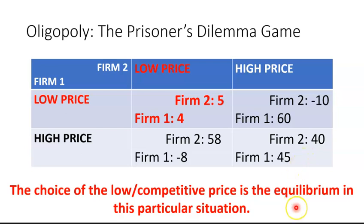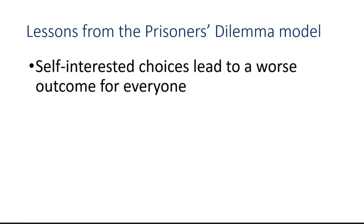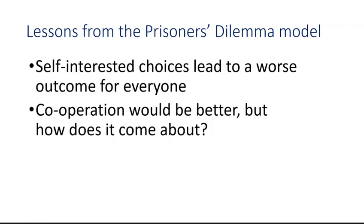We end up with what could be called an equilibrium: given that each firm has chosen the low price, there doesn't seem to be an incentive to move away and choose a high price. What do we learn from this simple story? If people only think about themselves and make short-term, greedy, self-interested choices, then everybody ends up with a worse outcome. Everybody understands that cooperation would be best for everyone, but the way this situation is structured, it can't really come about.